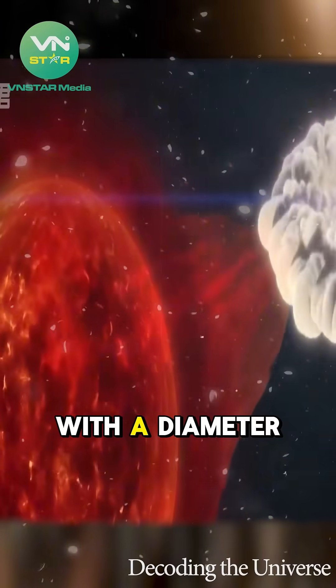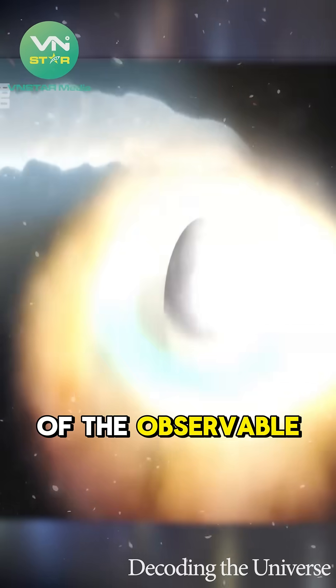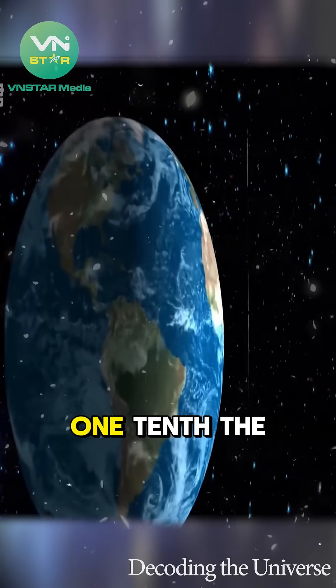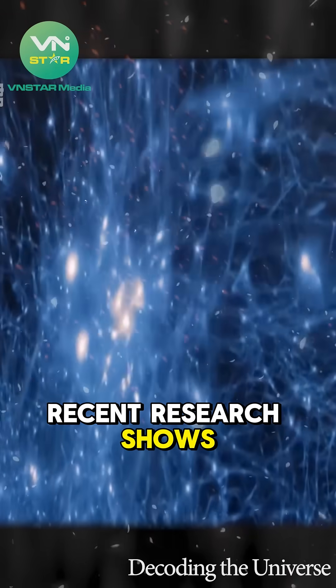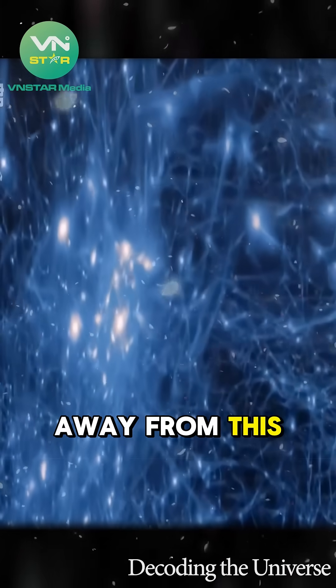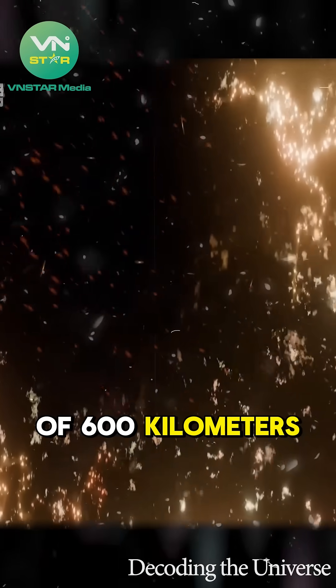This void, with a diameter equivalent to 2.2% of the observable universe, contains fewer than one-tenth the number of galaxies compared to normal regions. Recent research shows that the Milky Way is racing away from this void at a speed of 600 kilometers per second.